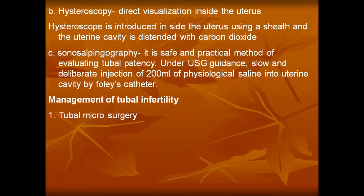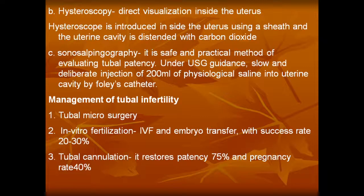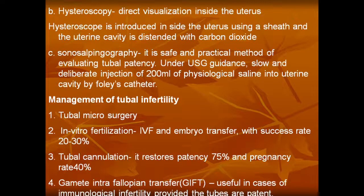Management of tubal infertility includes tubal microsurgery, in vitro fertilization and embryo transfer with a success rate of 20 to 30 percent, and tubal cannulation which restores patency in 75 percent with a pregnancy rate of 40 percent. GIFT (gamete intrafallopian transfer) is useful in cases of immunological infertility provided the tubes are patent.